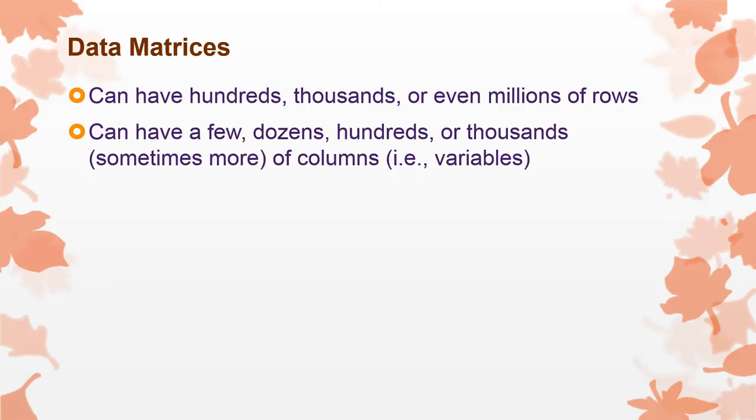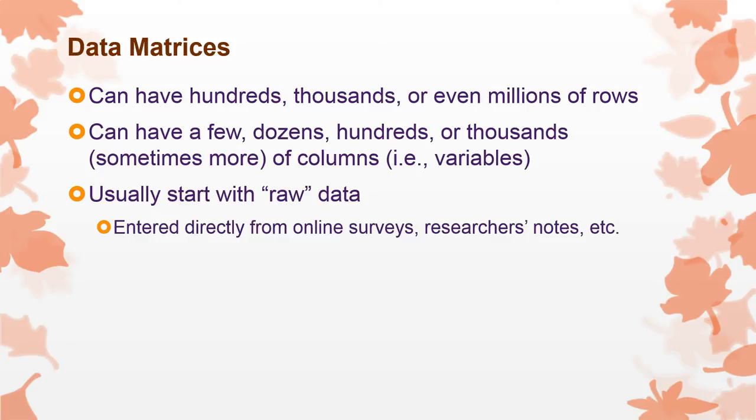A data matrix can have any number of rows or columns. It all depends on how much information you've collected, how many individuals, and how many characteristics from each individual. Usually a data matrix in its early in its life is just the raw data. It's exactly what you observed in your study. You collected it from a survey, sometimes downloaded it straight from an online survey, or had a computer just pipe it straight into your data matrix. Sometimes you had an army of undergraduates entering it from Scantrons or hand-filled questionnaires.